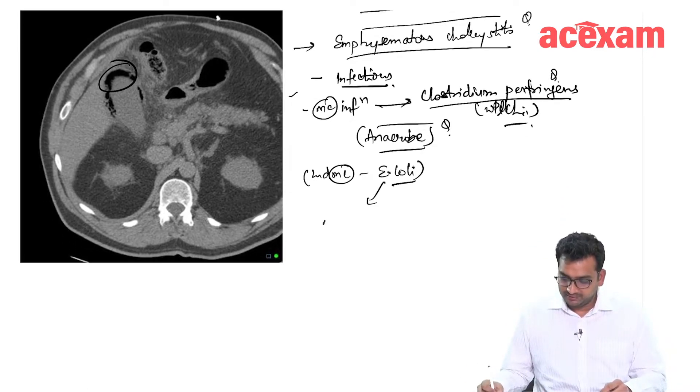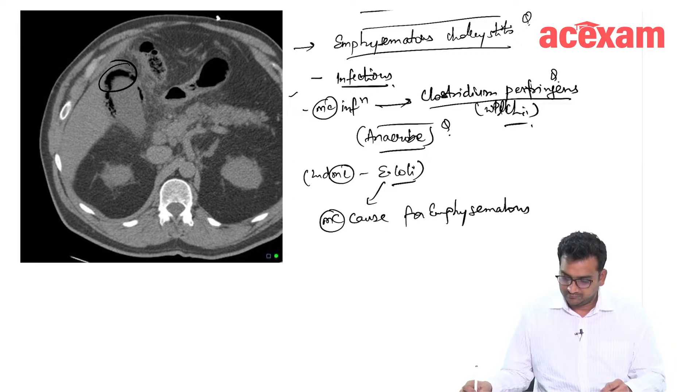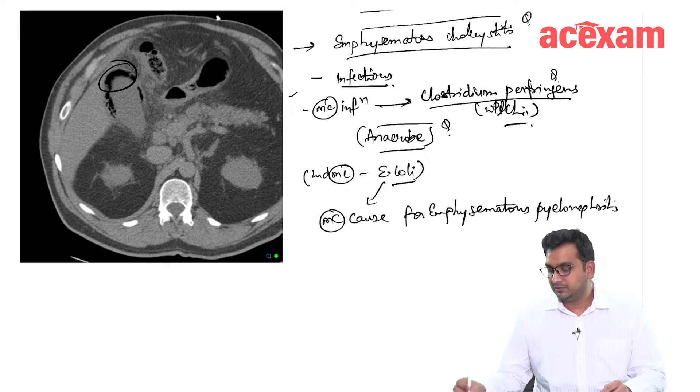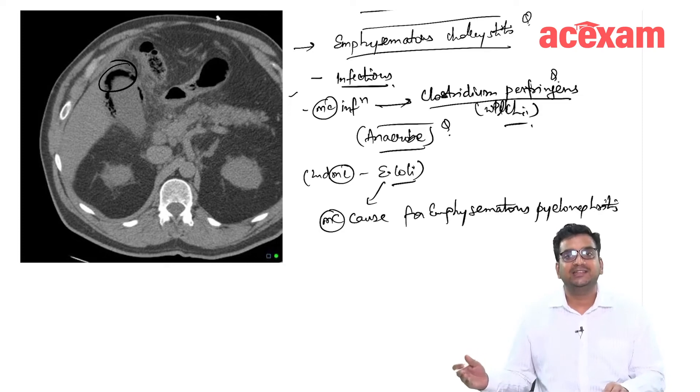Most common cause of emphysematous pyelonephritis is E. coli, but the most common cause of emphysematous cholecystitis is Clostridium perfringens.